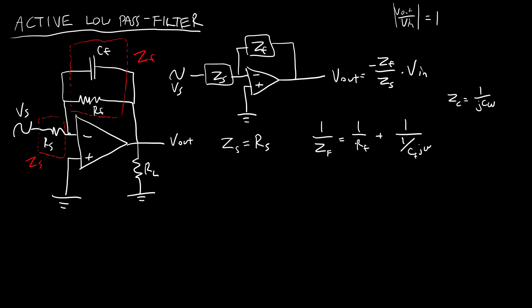So if we rearrange all of that to solve for ZF, I'm not going to write out all the algebra, but we get RF over one plus J omega RF CF. So now we have ZS, we have ZF. We can plug both of these into our equation for V out,